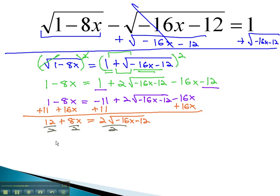So let's do that. This gives us 6 plus 4x equals the square root of negative 16x minus 12.